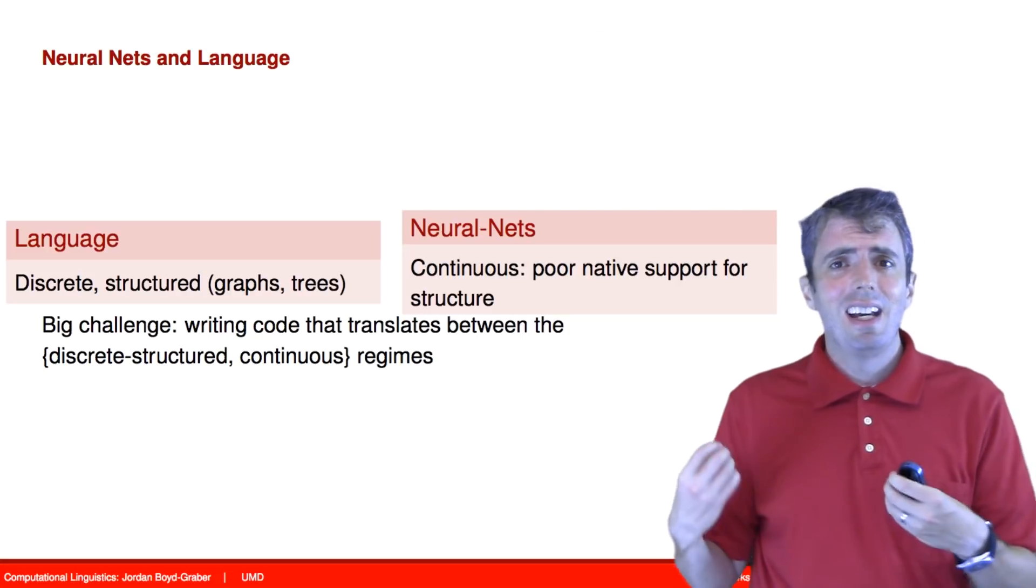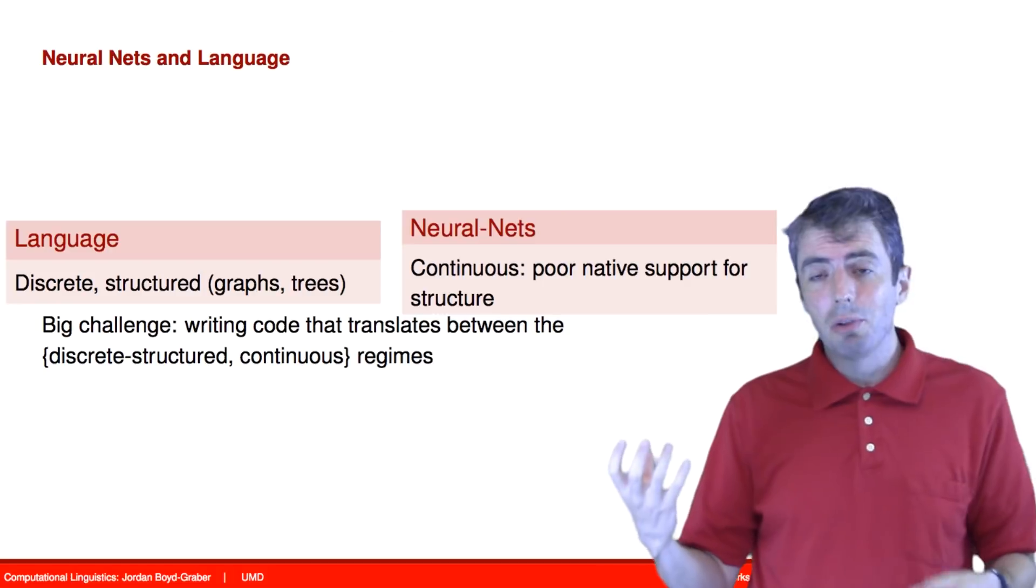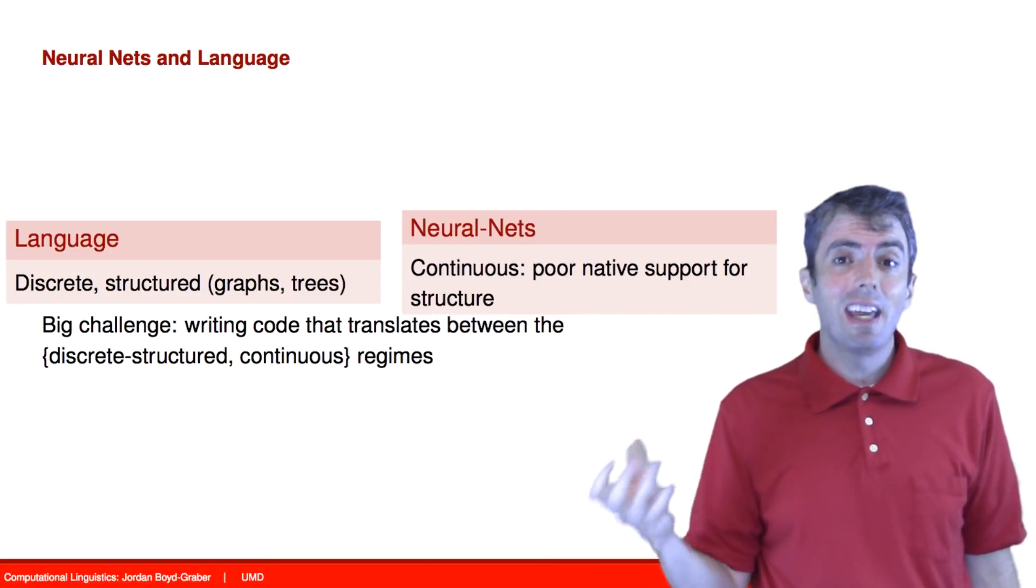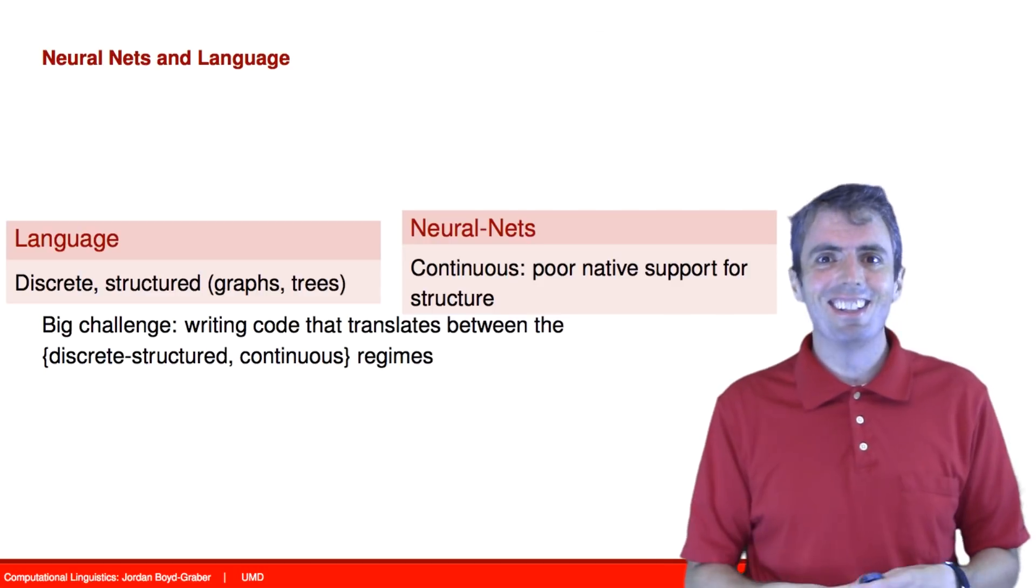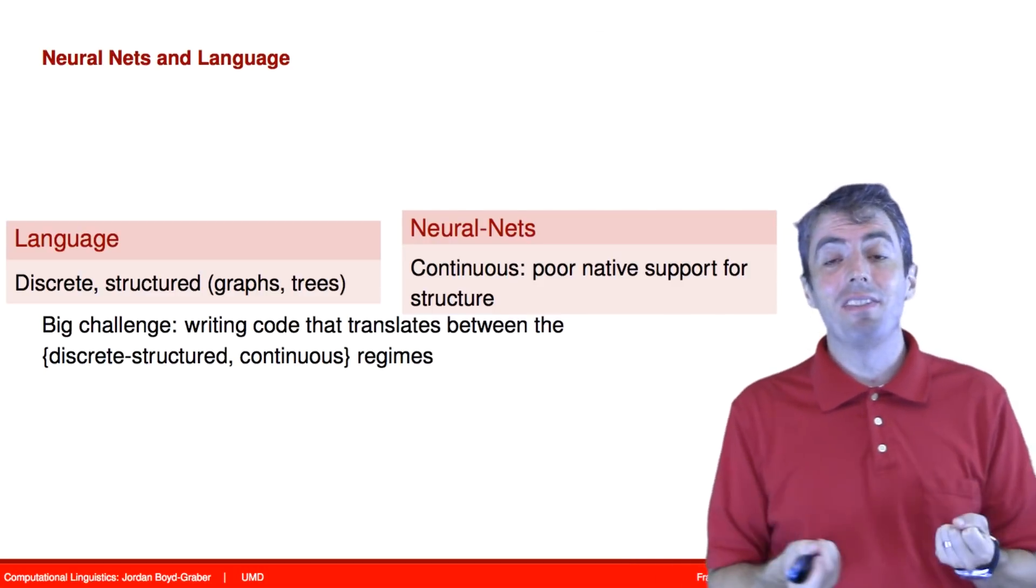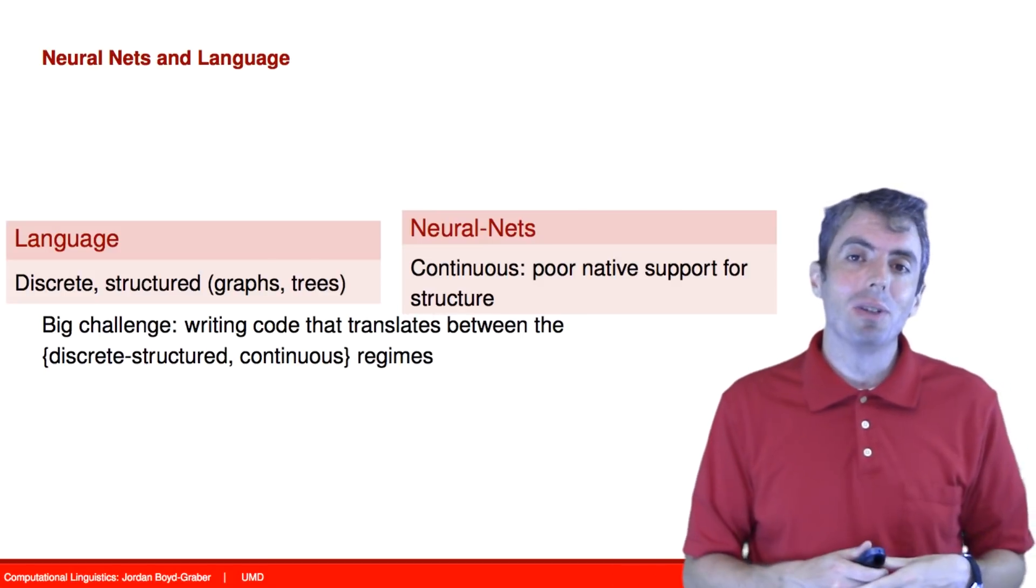So that makes our challenge a little bit more difficult. And this is why natural language processing is relatively late to the game compared to something like computer vision, where they had continuous inputs and continuous functions from the very beginning. We're a little bit later and slower because all of our inputs are discrete.